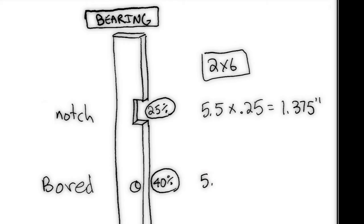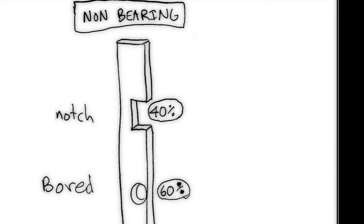Now if I'm going to bore or drill a hole I've got 5.5 times 40% and that gives me 2.2 on a 2x6. Almost enough to run a pipe through. Maybe an inch and a half pipe can make it through that but not much else. Let's look at non-bearing.